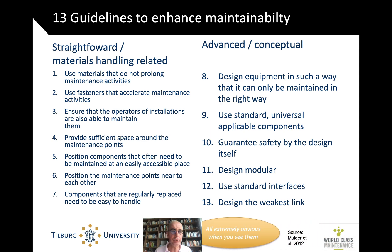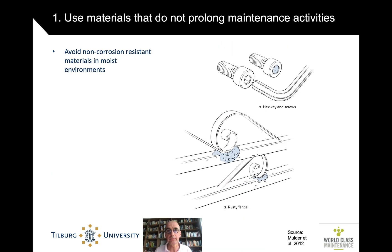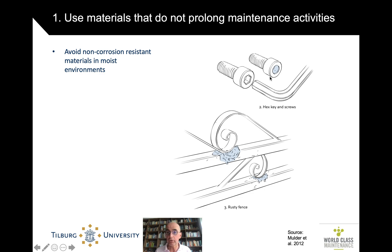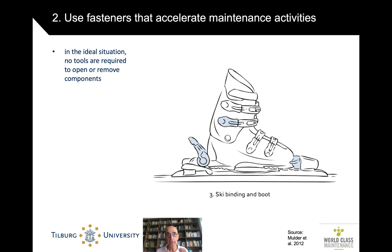Every time you look at these examples they seem so obvious, especially because the authors use real normal-life examples with nice pictures. But that doesn't mean they are easy and obvious to implement in design — on the contrary. Easy reading is hard writing, and the same is true for design. The first guideline: do not use materials that prolong maintenance activities, such as materials that rust quickly, or hex screws that wear out and become unusable after being fastened and unfastened a few times.